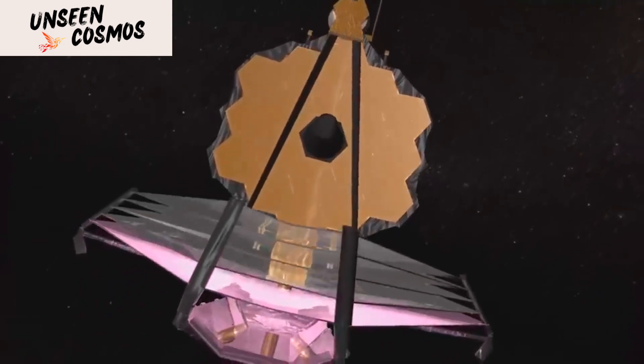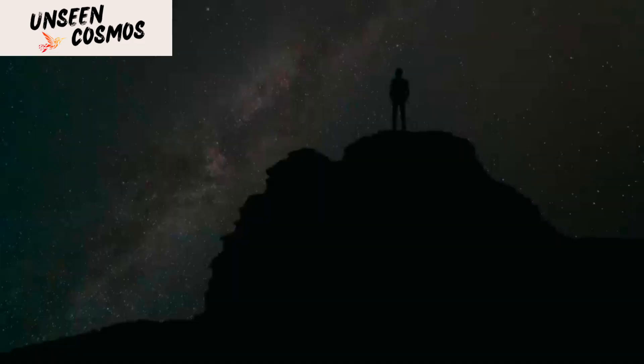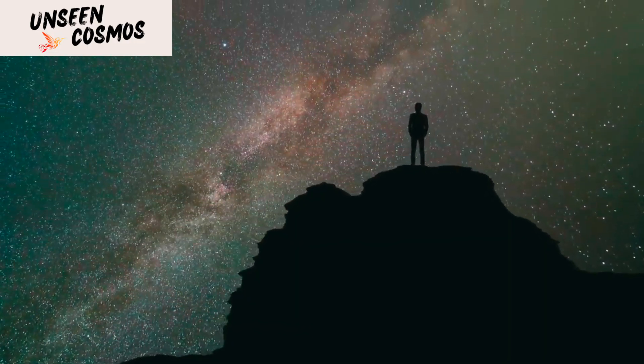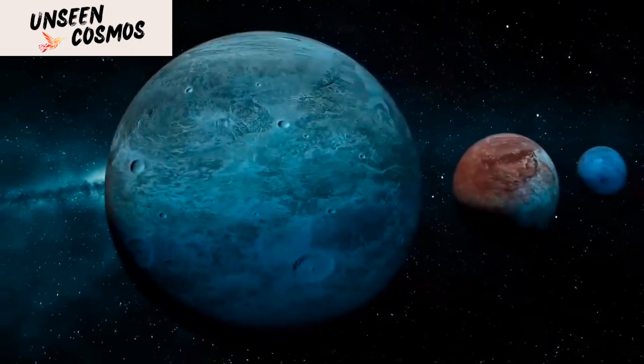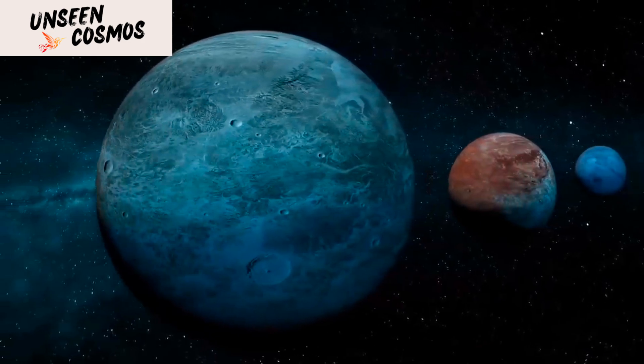Proxima b is an exoplanet that orbits Proxima Centauri, which is the closest star to our solar system. The star is only 4.24 light-years away from us, which makes it an ideal target for studying exoplanets.